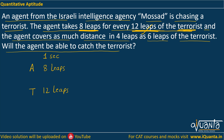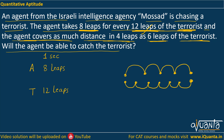After that, the agent covers as much distance in 4 leaps as 6 leaps of the terrorist. So if the agent is taking 4 leaps, he is covering a certain distance. That same distance is covered by the terrorist in 6 leaps — 1, 2, 3, 4, 5, 6. Since the distance is the same, I can take the LCM of 4 and 6, which is 12. So let me assign 12 meters to this distance.